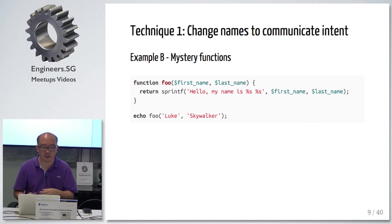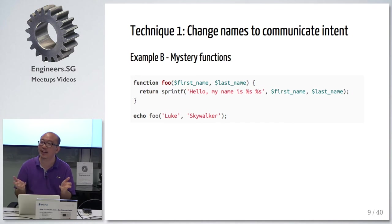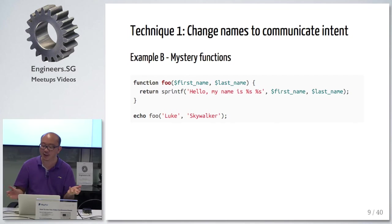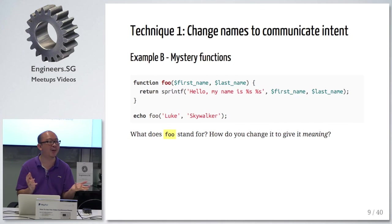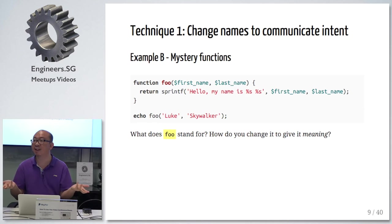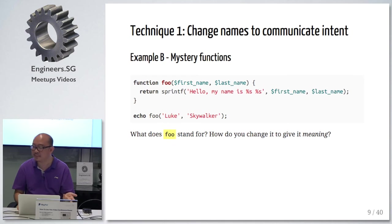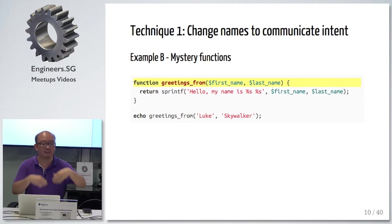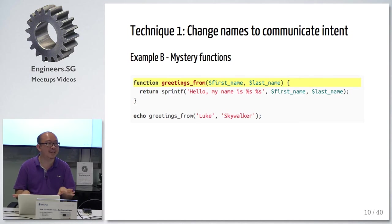Mystery functions — how many of you have actually seen mystery functions? What is 'foo'? So foo takes two arguments. What does it give you? It spills out a greeting. What is this mystery function? How should we rename it to give it meaning? Any guesses? Say hello — you greet somebody. So it's a greeting. Greeting from first name, last name. Some of my examples are very contrived, but you get the picture. So: change names to communicate intent.